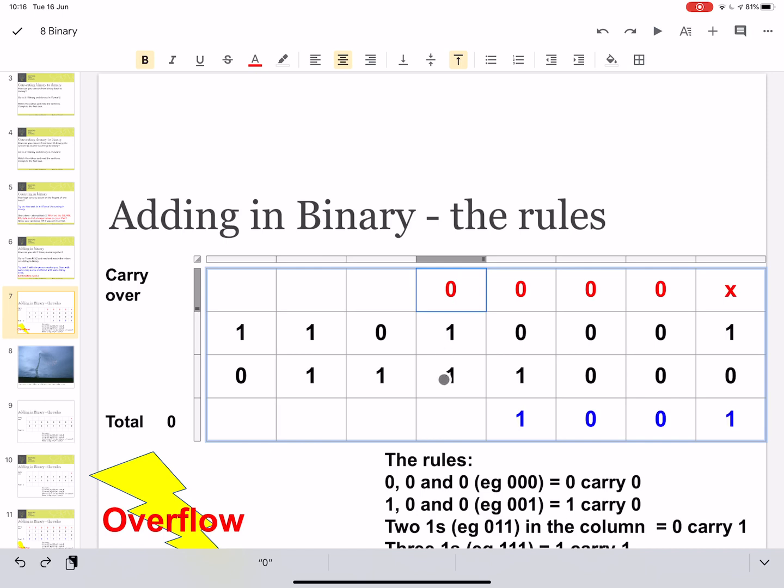Now this time, something slightly different. We've got 2 1s and a 0. So look, 2 1s and a 0, 0 carry 1. This is slightly counterintuitive because you would have thought 2 1s added together would make 2. But remember, in binary, we can only use 0 and 1. So 2 1s added together, a 0, carry the 1 to the next column.